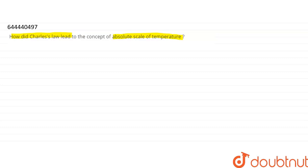Let us see what Charles Law is first. Charles Law is also called the law of volumes. It is an experimental gas law and it describes how gases tend to expand when heated.